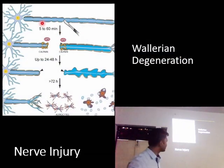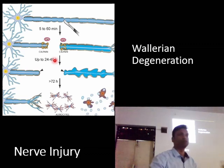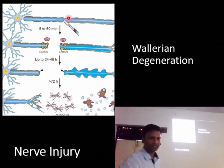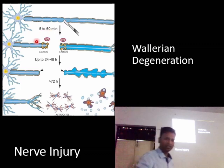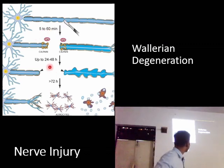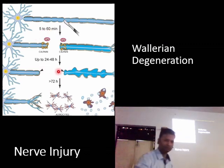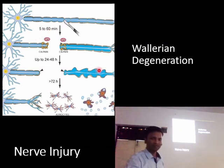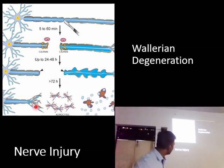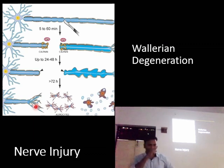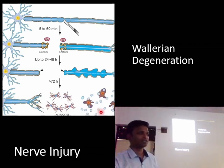This diagram is somewhat similar to what you are going to see in your textbooks. There is total discontinuity — in this example the axon is cut. There is Wallerian degeneration of the distal segment, and then there is proliferation of the axonal ending from the proximal segment, and the axon is regenerated.